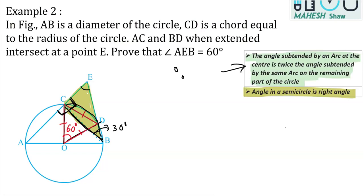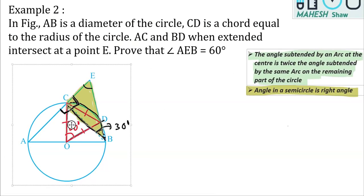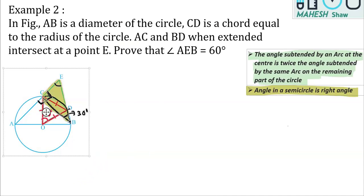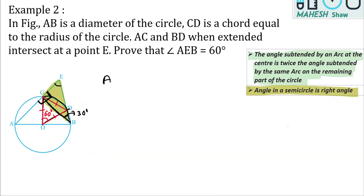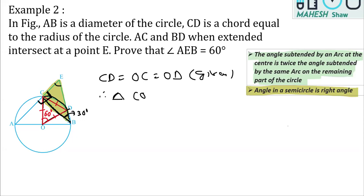Let's write the proper working. CD is given equal to the radius, and the radii OC and OD are equal. Therefore, triangle COD is an equilateral triangle, and each angle of an equilateral triangle is 60 degrees. So, angle COD is equal to 60 degrees.